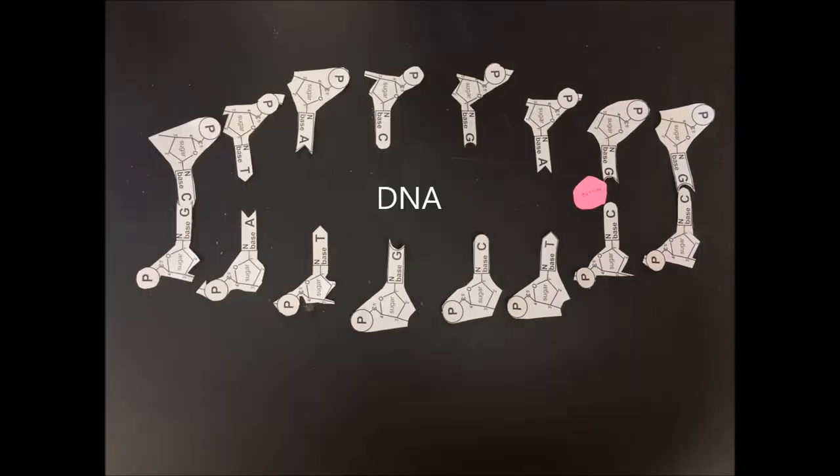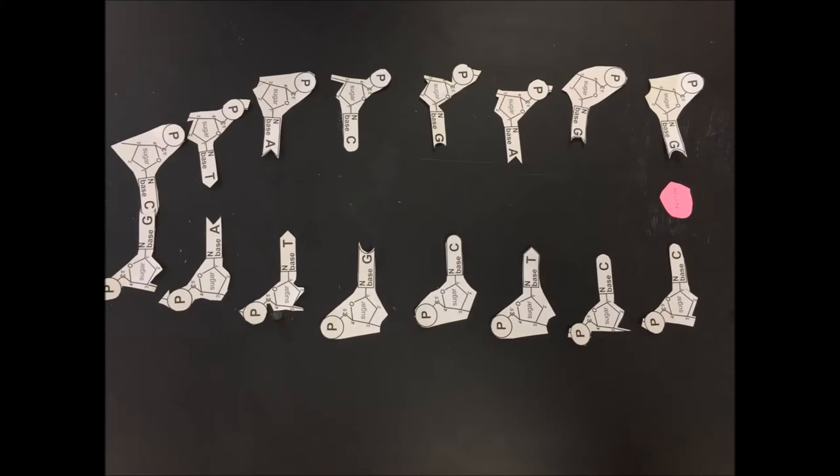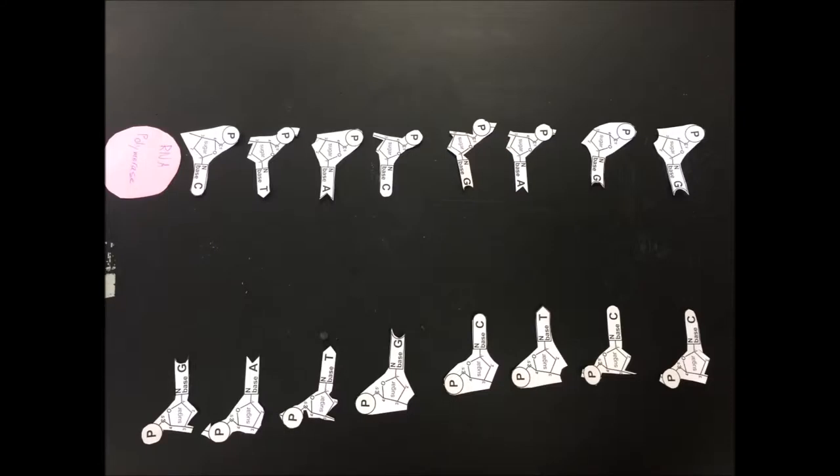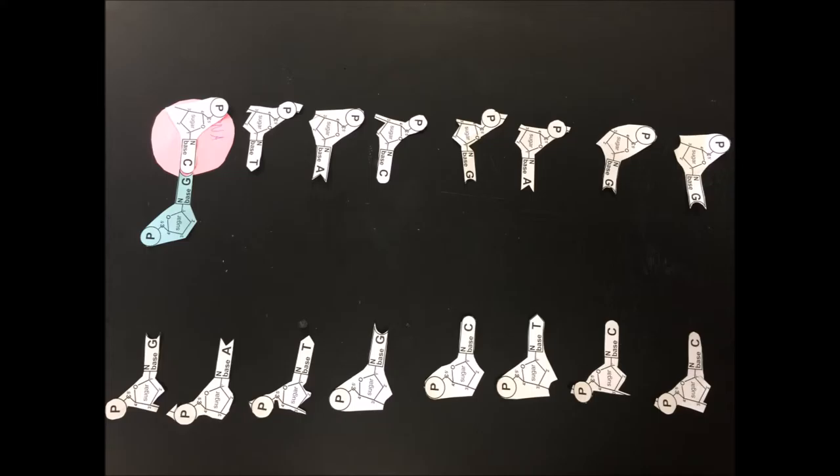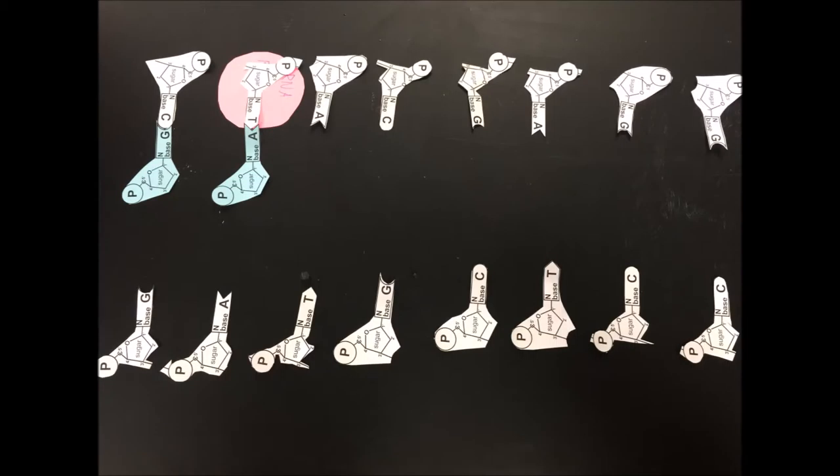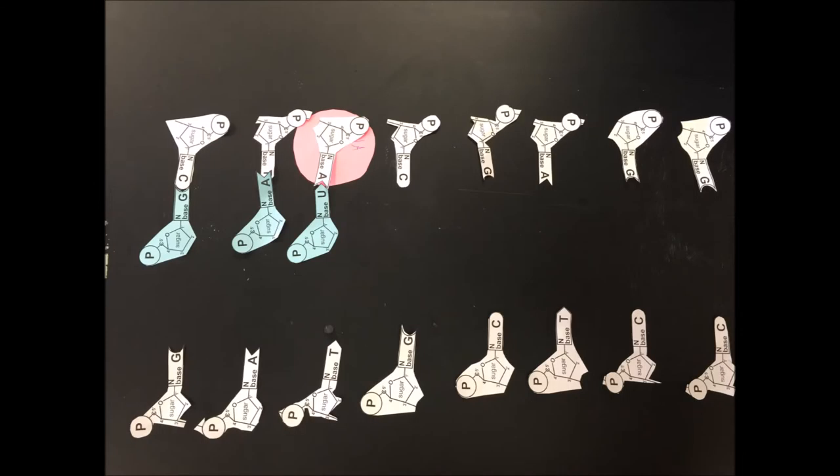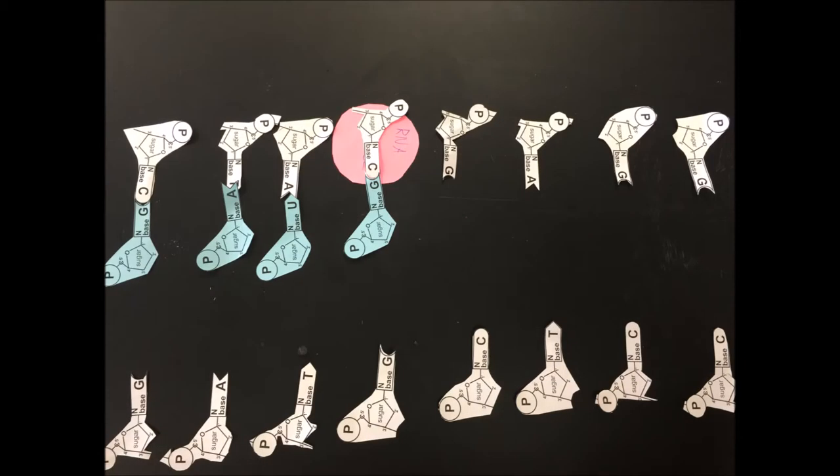Transcription is the first step. Transcription starts off in the nucleus, where DNA is located. The DNA in the nucleus pairs exactly with RNA and creates mRNA or messenger RNA. The messenger RNA then leaves the nucleus and goes to a ribosome. The mRNA contains the instructions for making proteins. The mRNA leaves the nucleus through the nuclear envelope.